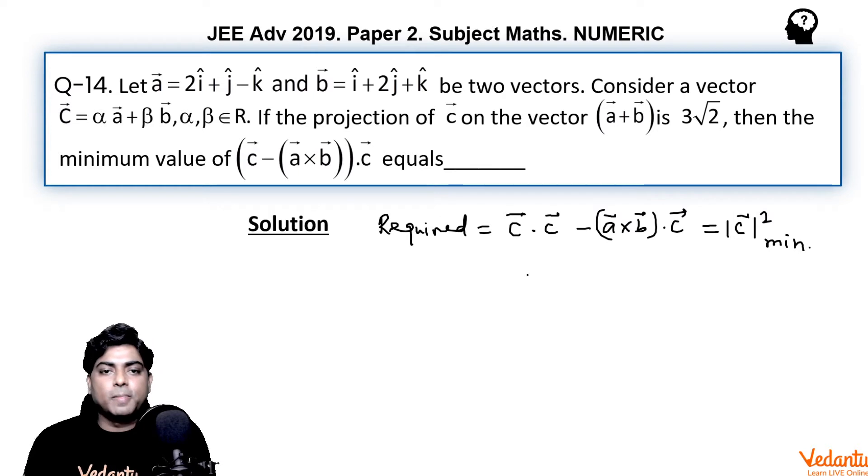Now a + b is a fixed vector, right? So suppose a + b is like this, and c is somewhere like this. The projection of c on a + b will be like this, and this is given as 3 root 2.